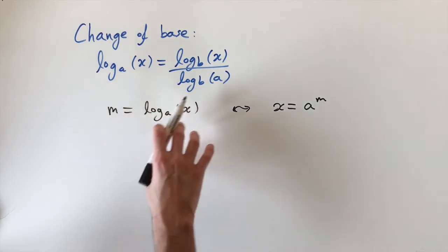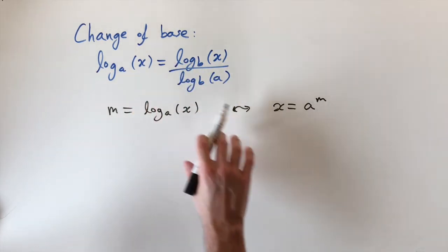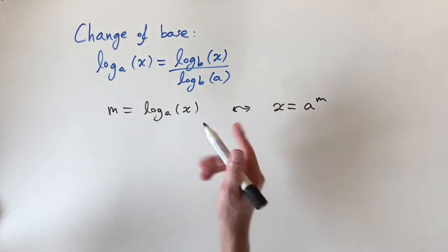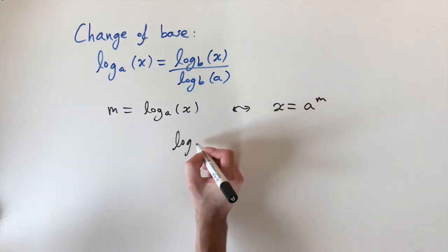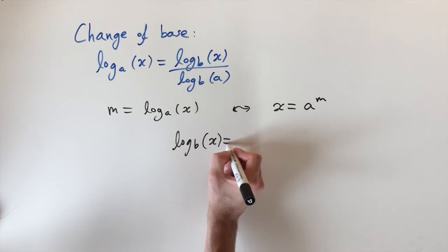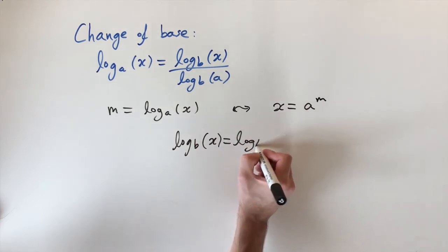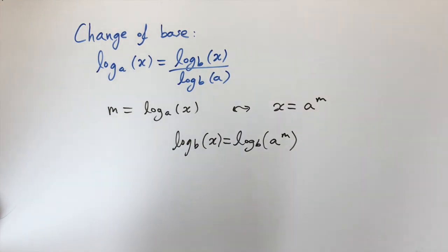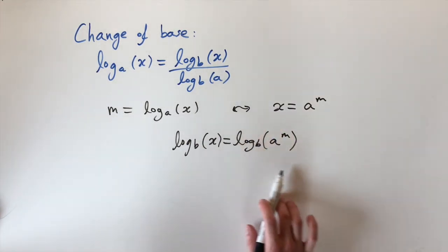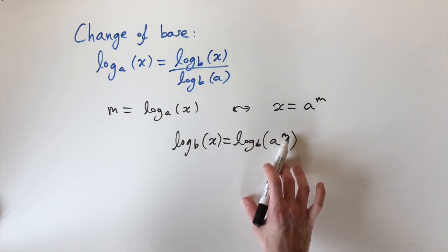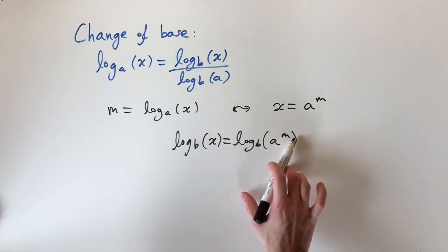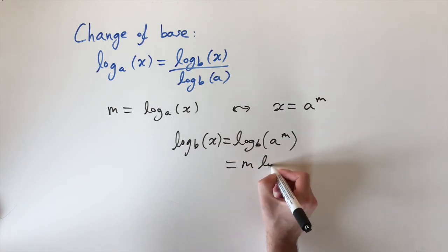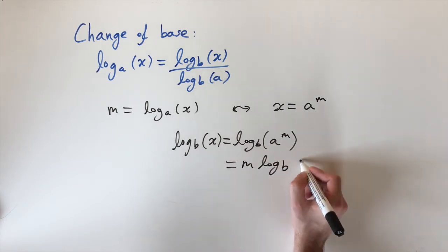Since we want to express m in terms of a logarithm of base b, we're going to apply logarithms of base b to both sides of this equation. So we get log base b of x equals log base b of a to the power of m. This is useful because we can apply the power law of logarithms, which lets us bring the exponent m down to the front, giving us m times log base b of a.